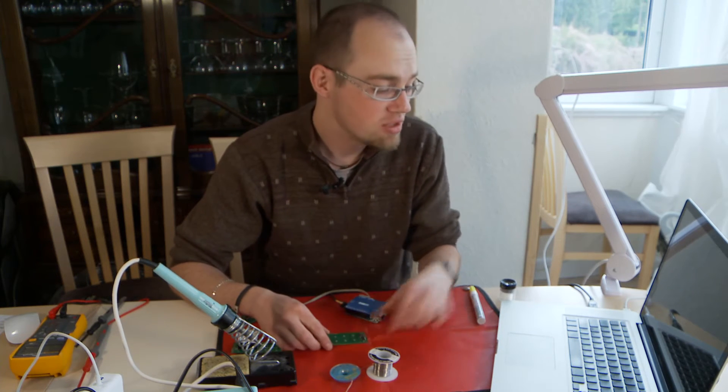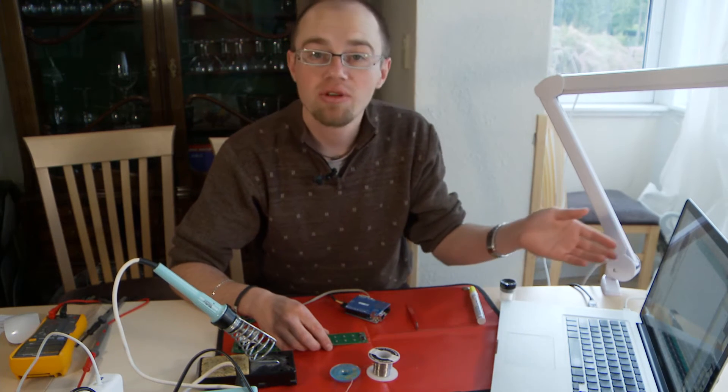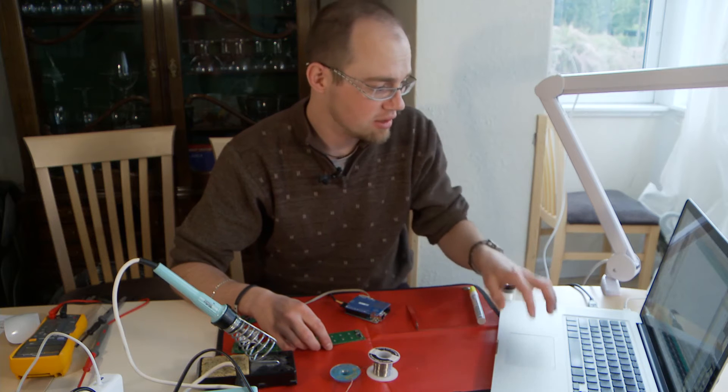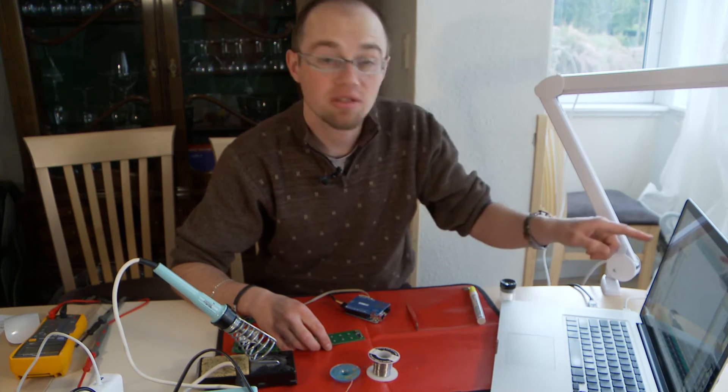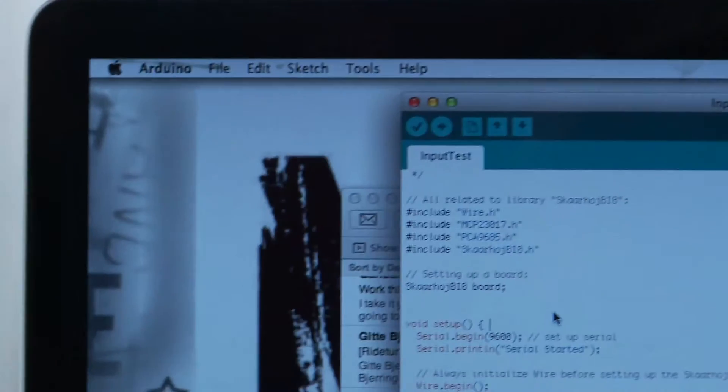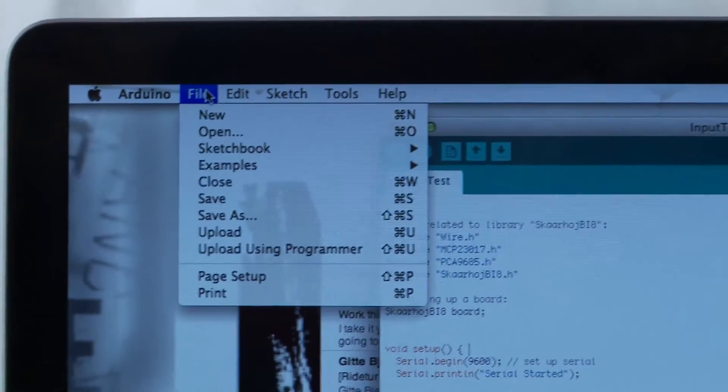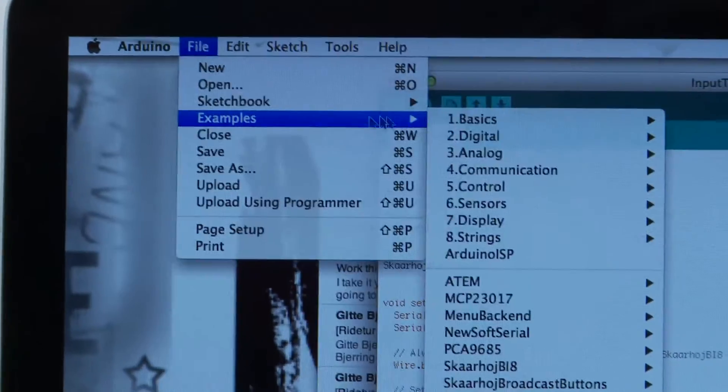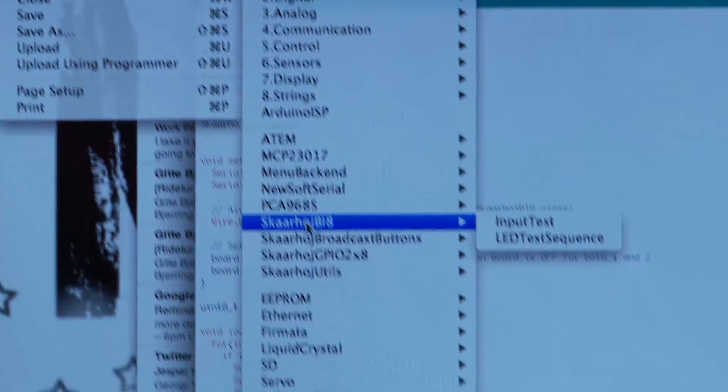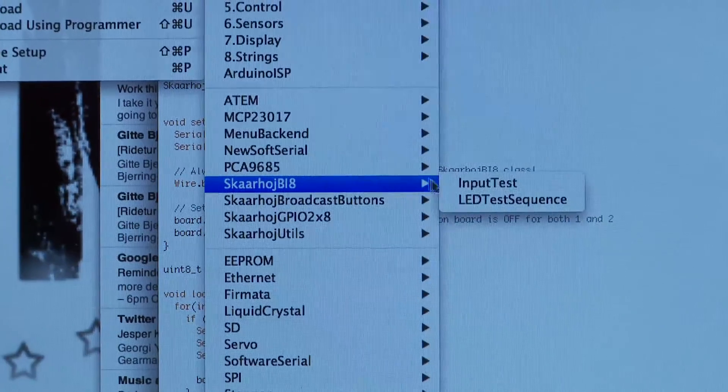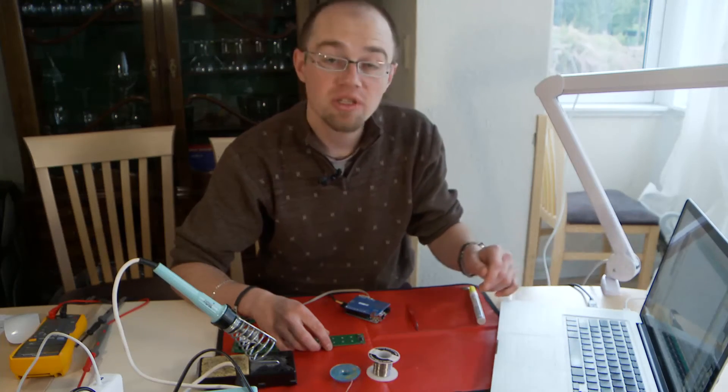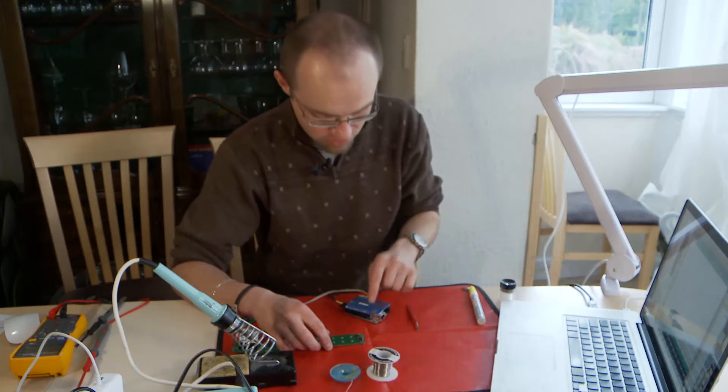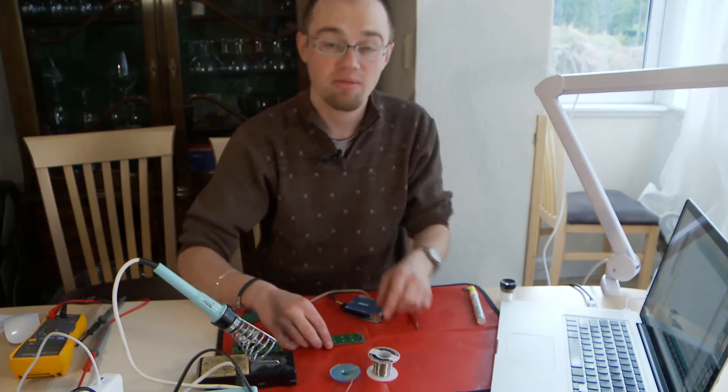Before doing the test you need to download the library from the website and then you have to put it in the correct folder and then you find the correct test script under examples and then you go to scohoy bi8 and you take input test. Then once you open this file you upload it to the Arduino board and then you can make the test.